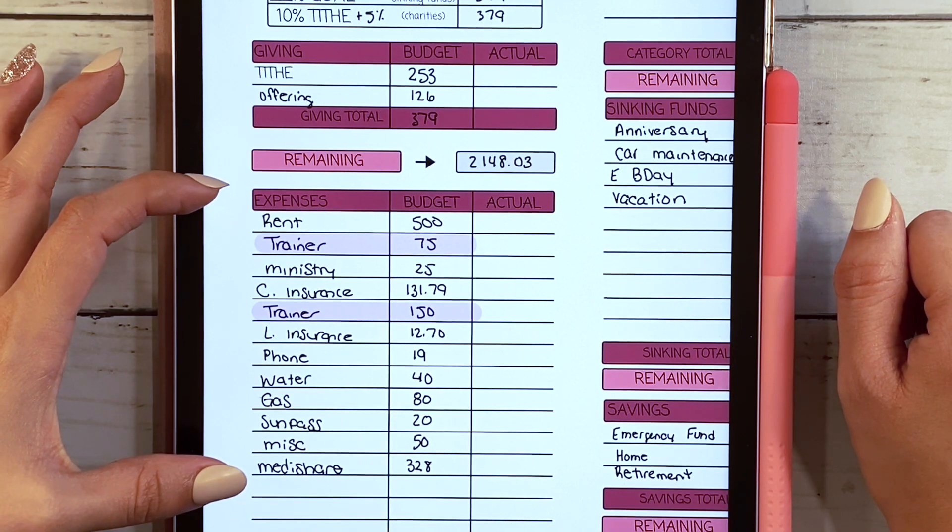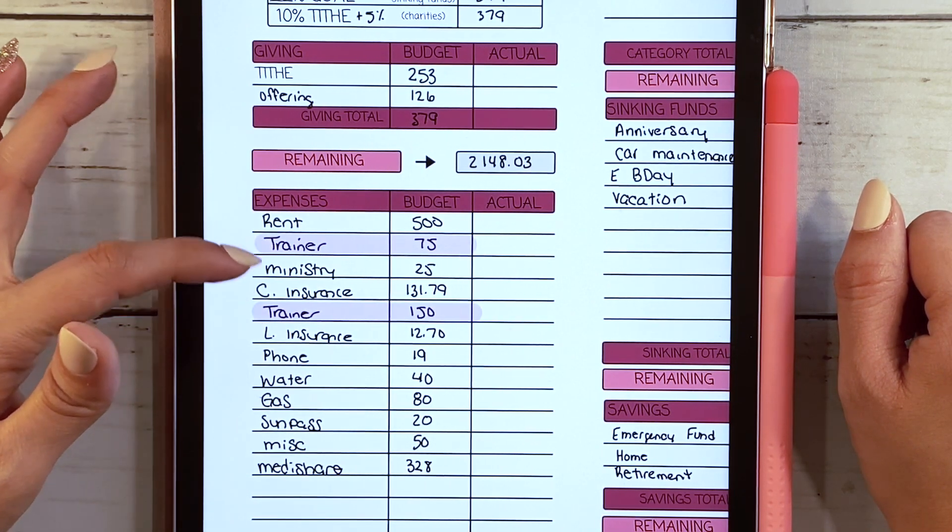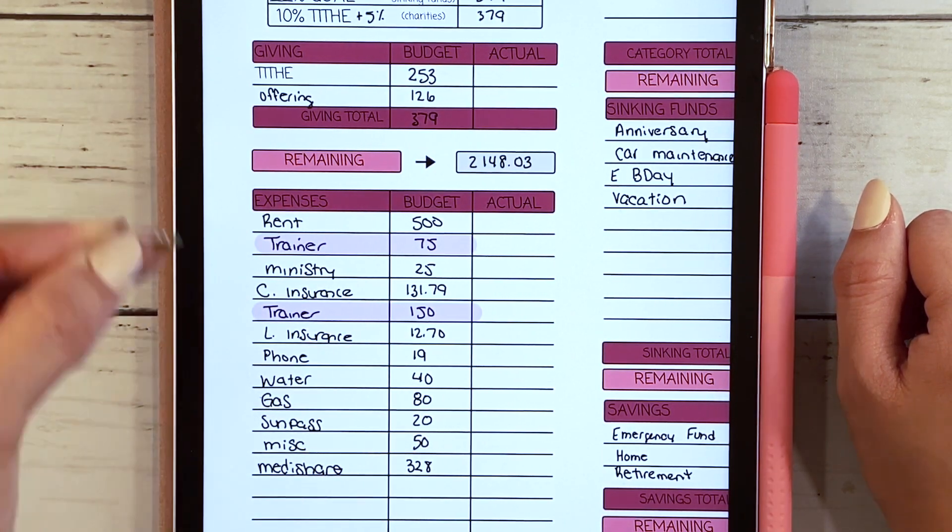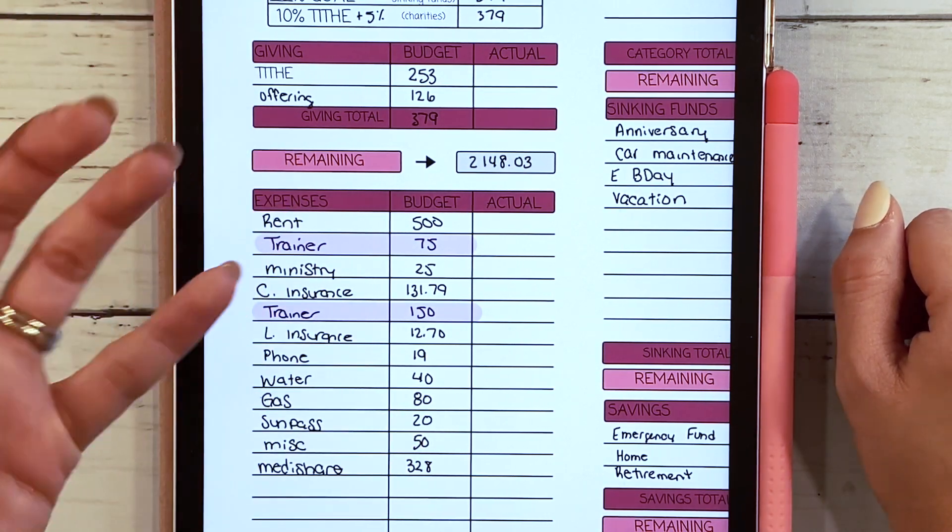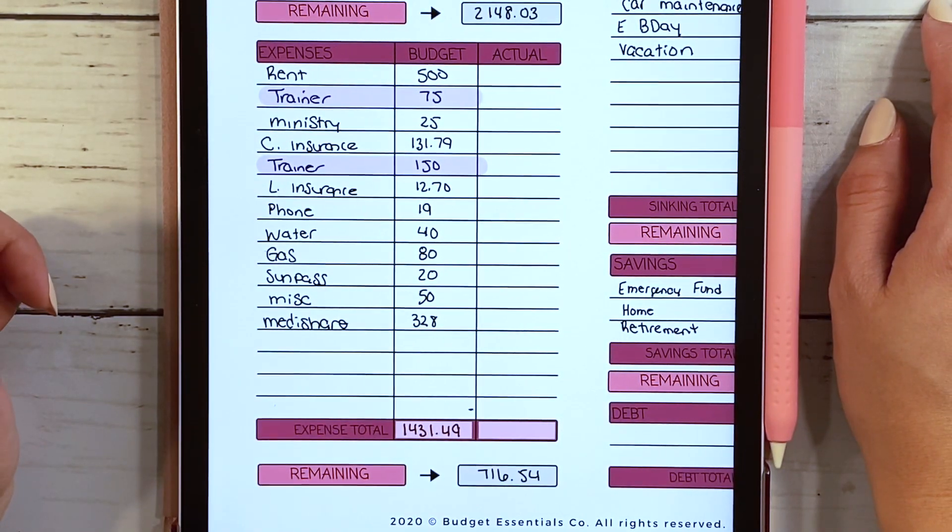Utilizing the bill tracker, these are the expenses that we are setting aside. The highlighted ones are what we actually withdrew in cash because we pay my husband's trainer in cash, so it just makes sense for us to do it that way.